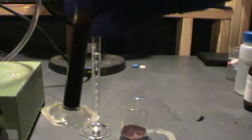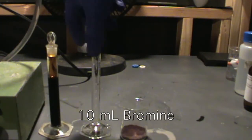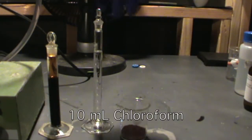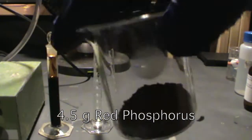For this synthesis, you will need 10 mL of bromine, 10 mL of chloroform, and 4.5 grams of red phosphorus.